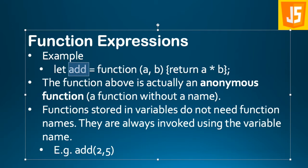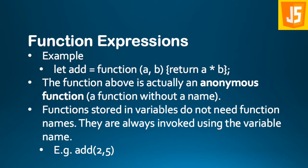This function is an anonymous function — anonymous means without a name. Functions stored in variables do not need function names. They are always invoked using the variable name. So add was the variable, and we can just say add(2, 5) just like we invoke a normal function.